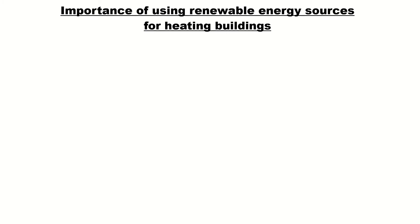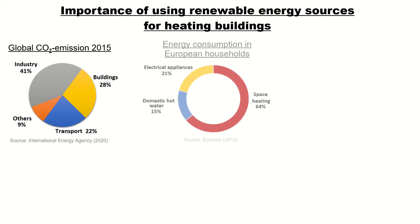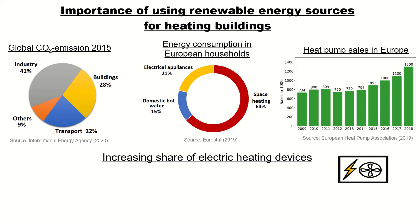Let's talk about the importance of using renewable energy sources for heating buildings. On the left chart you see the global CO2 emissions, and there you can see that 28 percent are caused by the building sector. In the middle chart you see the energy consumption in European households, where 64 percent are caused by space heating and another 15 percent by domestic hot water. On the right chart you see heat pump sales in Europe, which have steadily been increasing over the last years.